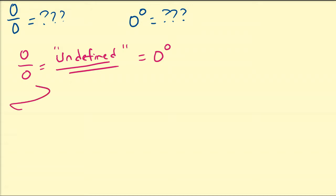So we may ask: since it's undefined, can I define it to be equal to something? Why not define zero divided by zero to be equal to zero? Why not define it to be equal to one? Why not define it to be equal to pi or something like that? That's what we're going to discuss in this video.